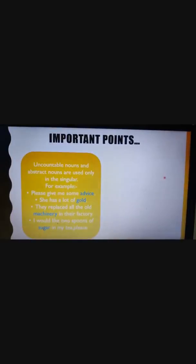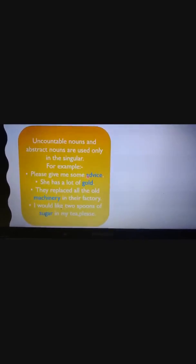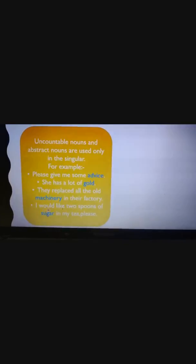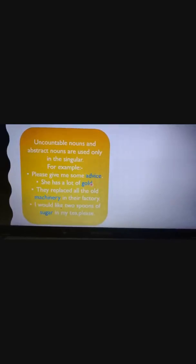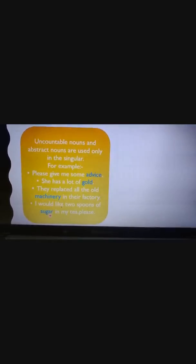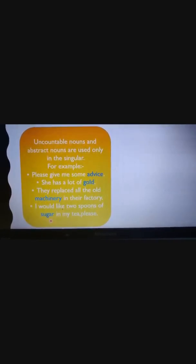Uncountable nouns and abstract nouns — which we can only feel — are used only in the singular. For example: 'please give me some advice,' 'she has a lot of gold,' 'they replaced all the old machinery in their factory,' 'I would like two spoons of sugar in my tea.' Gold, machinery, and sugar are uncountable nouns; advice is an abstract noun.